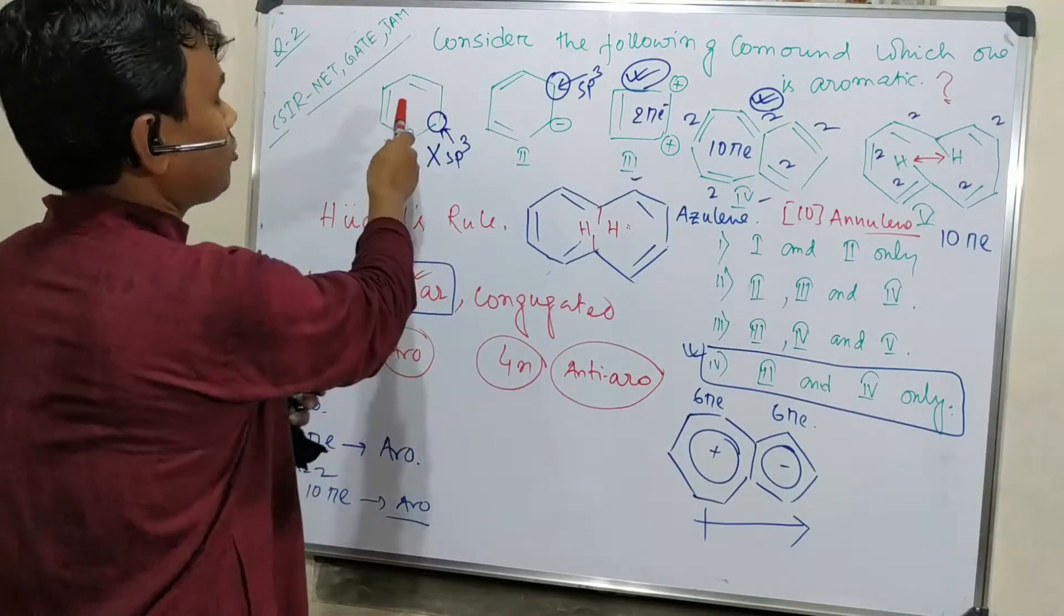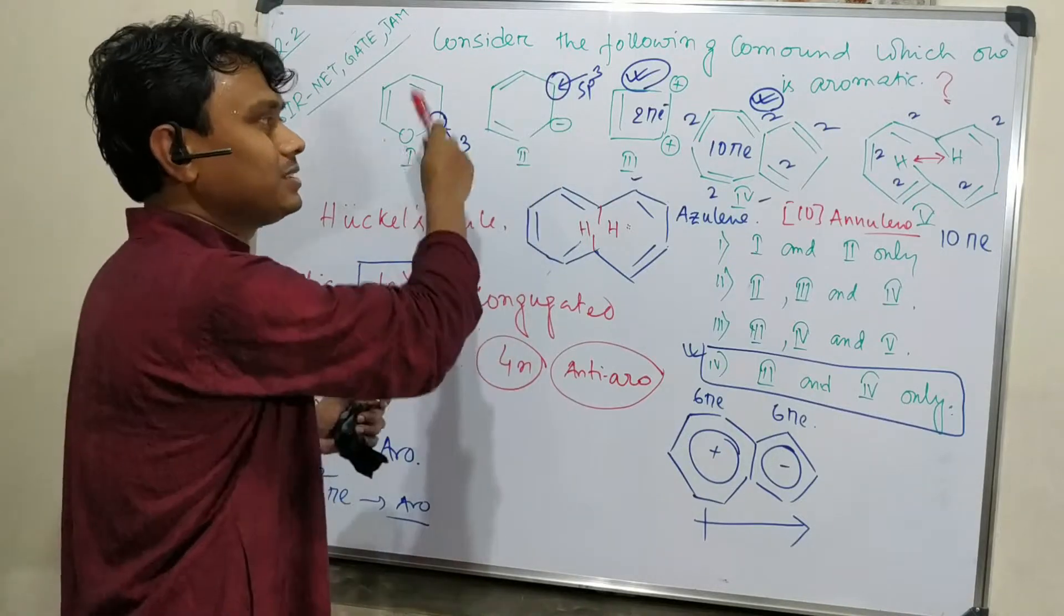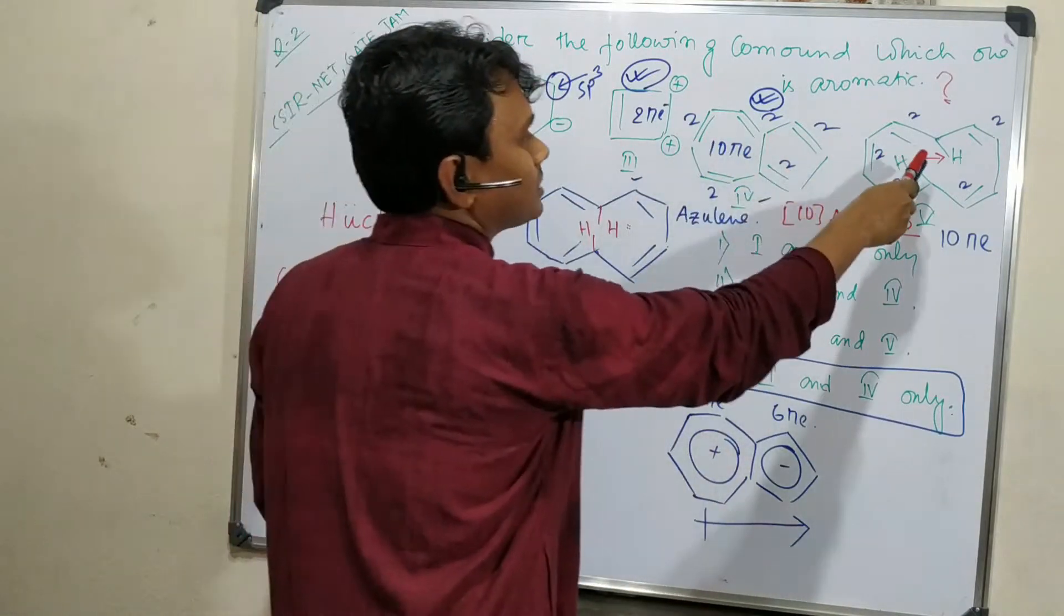So here not conjugated, here not conjugated. Two sp3 centers, they have to be rejected. So now the question is this.